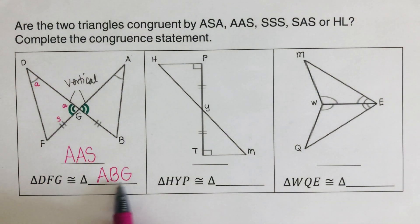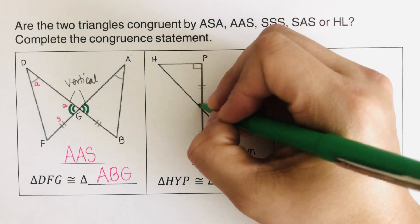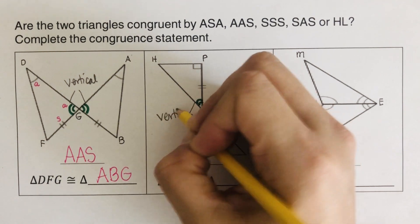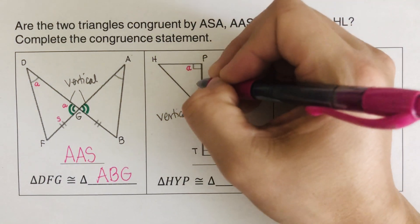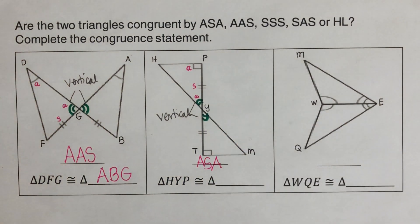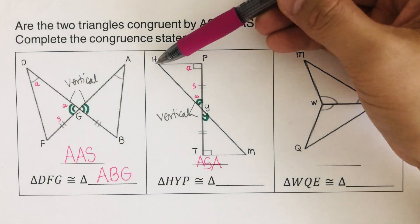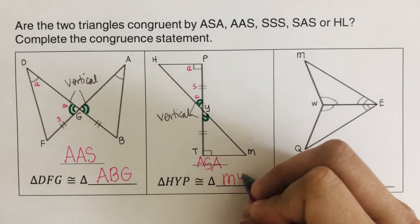Let's take the next one. This side right here is congruent — again, the reason is vertical angles. These two are vertical angles, so even without tick marks they are automatically congruent. So we have an angle, side, and angle — this is ASA. The triangle is named H, Y, P. The corresponding congruent statement gives us triangle HYP is congruent to triangle MYT.